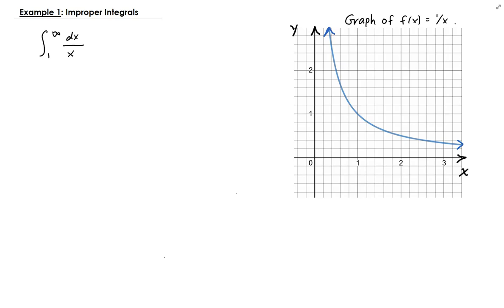In this example, we want to evaluate what's called an improper integral of 1 over x going from 1 to infinity. The reason this is called an improper integral is because of the form that we have here. The upper bound of this integral is going to infinity.